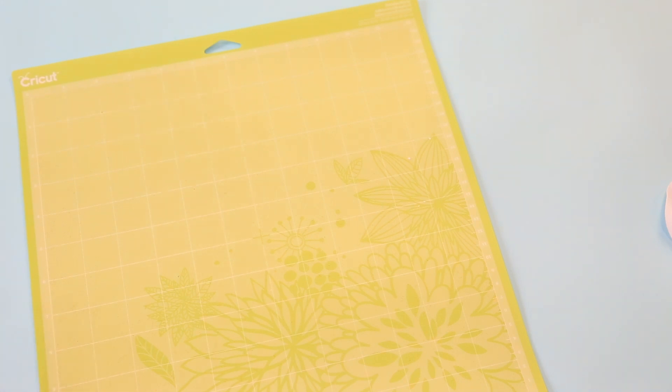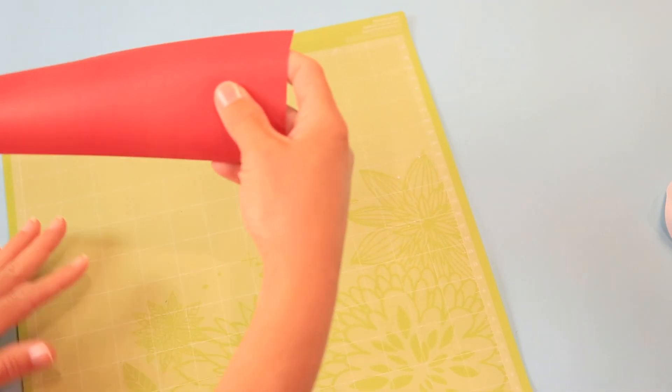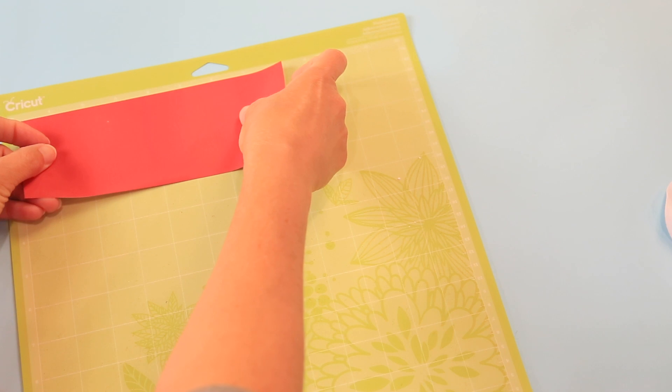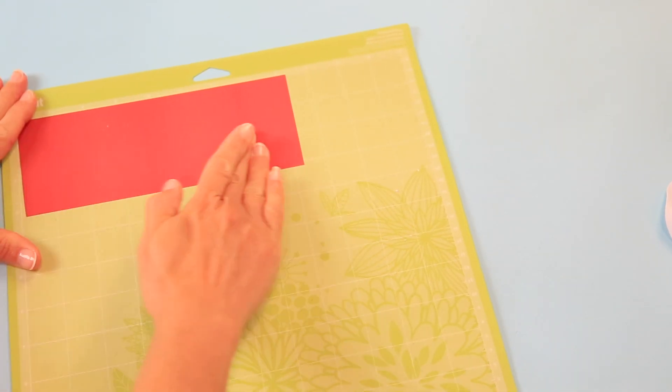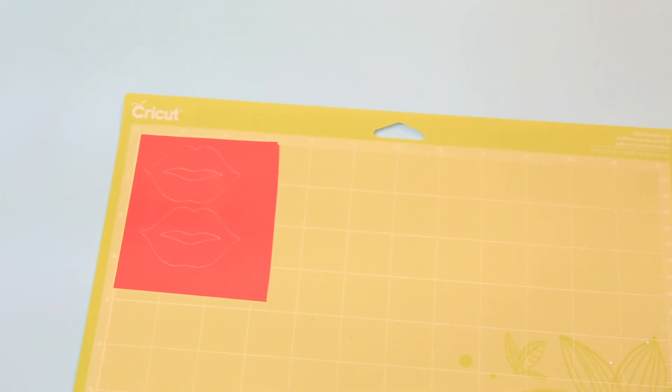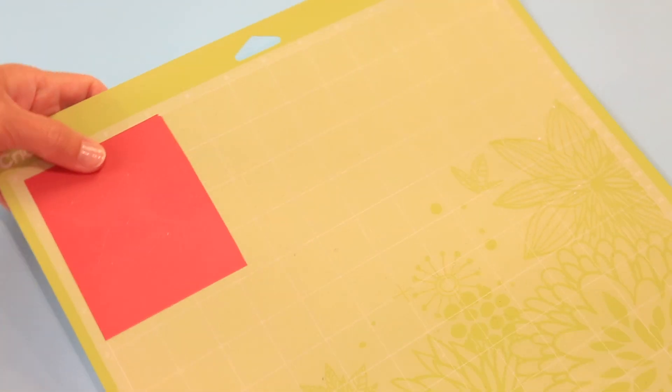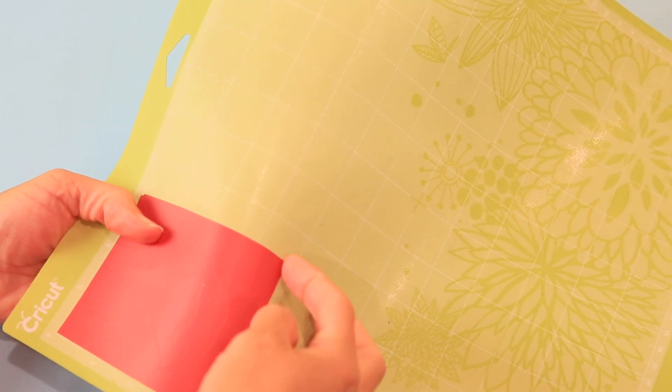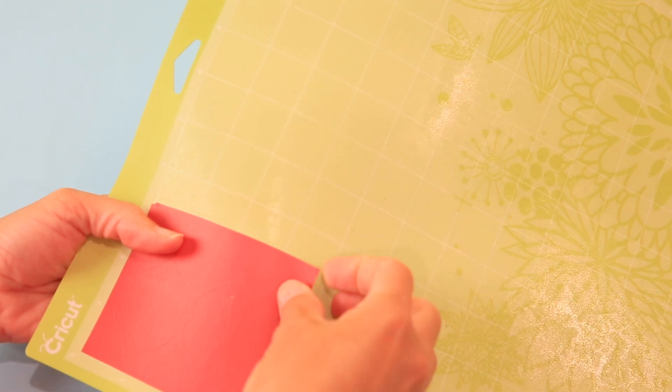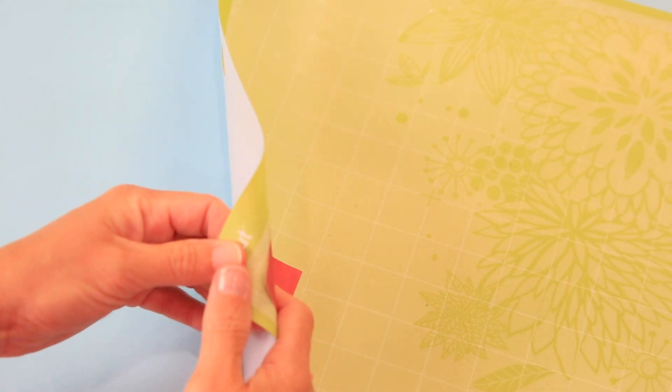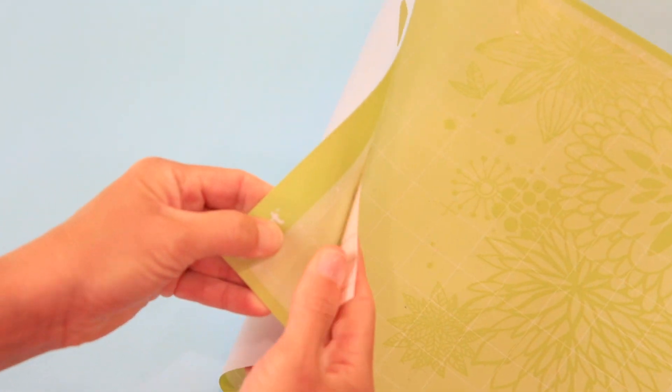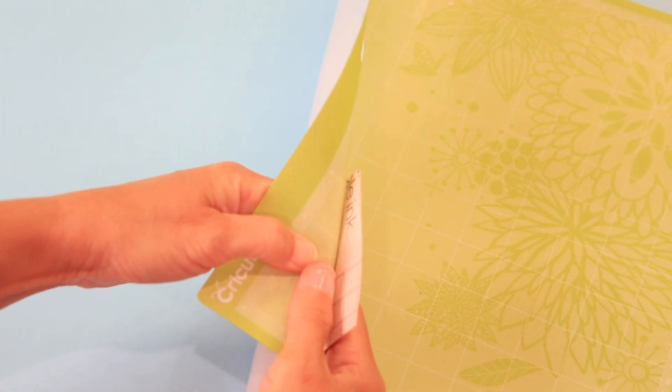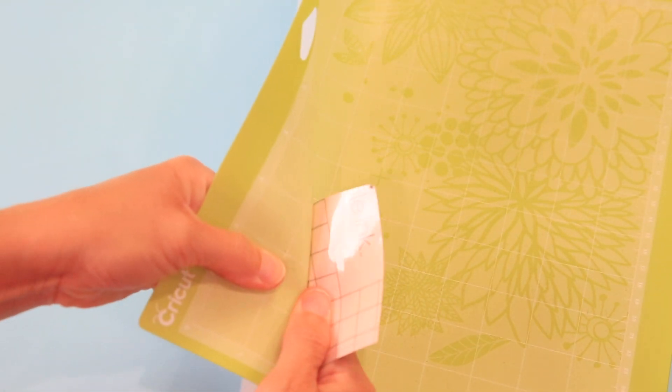Okay so now we're going to apply that to the mat and because we reversed it we are going to put it face up on the mat. Okay so I decided to make it just a smidge smaller and so the lips are a little closer to my actual face size. Okay so here's one key when you're pulling material off of a mat make sure that you are bending the mat and not the material. Okay there we go.